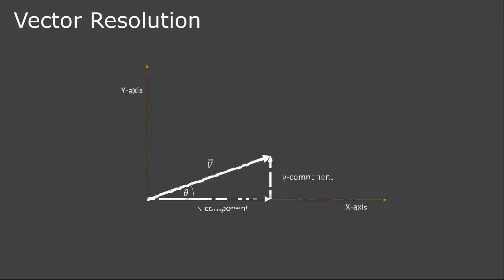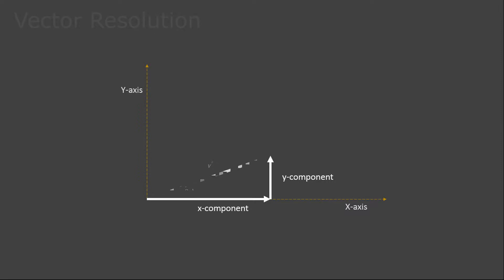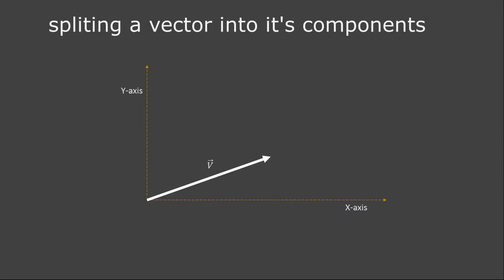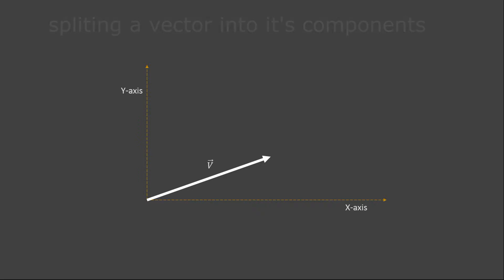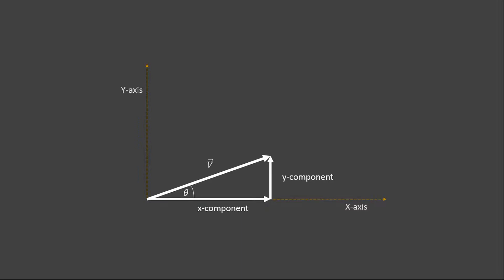The splitting of a vector into its components is known as resolution of a vector. If we have a vector V in the xy plane of a Cartesian coordinate system making an angle theta with the x-axis, then we can split this vector into x and y components, which are known as the components of vector V.